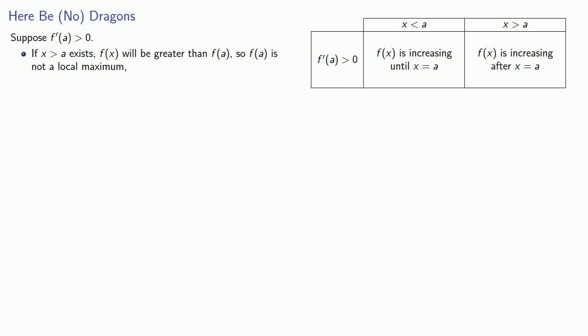On the other hand, if x less than a also exists, f(x) will be less than f(a), so f(a) is not a local minimum.